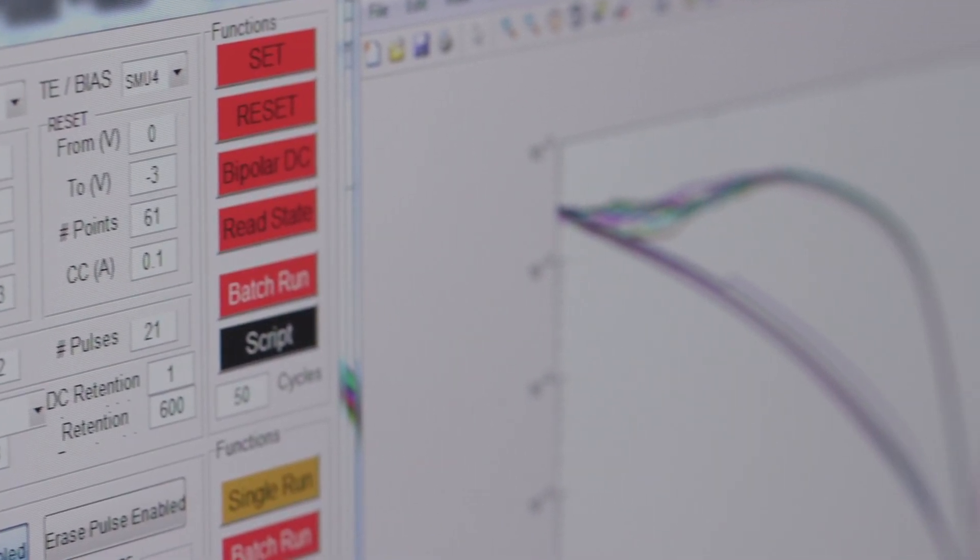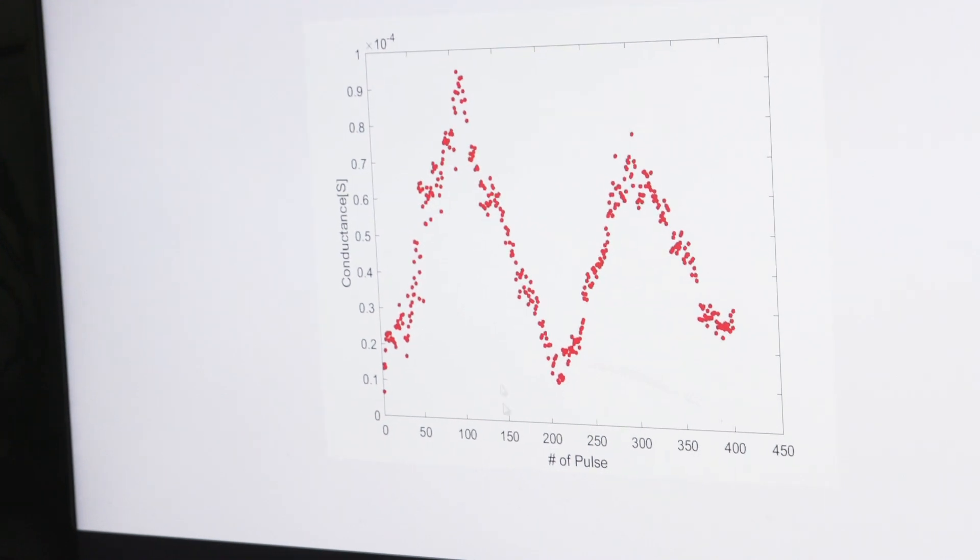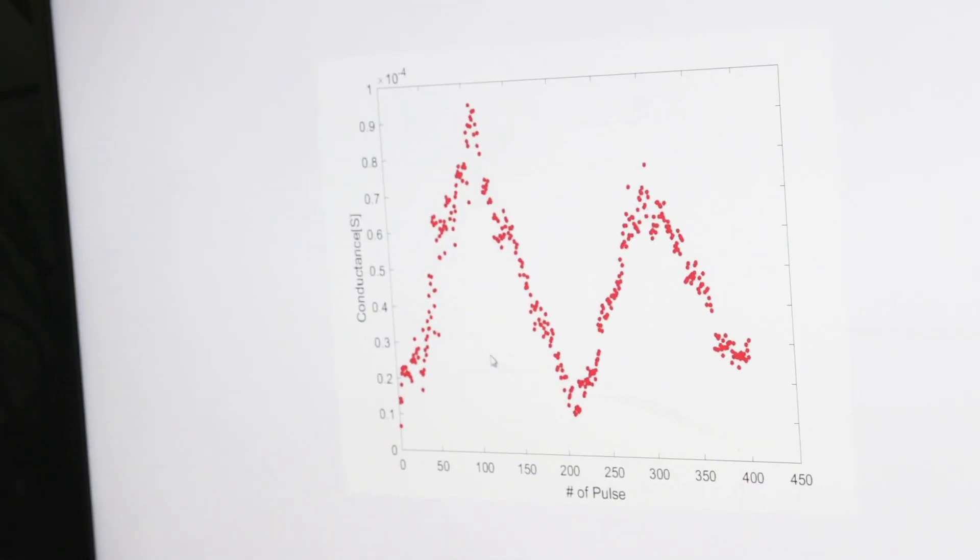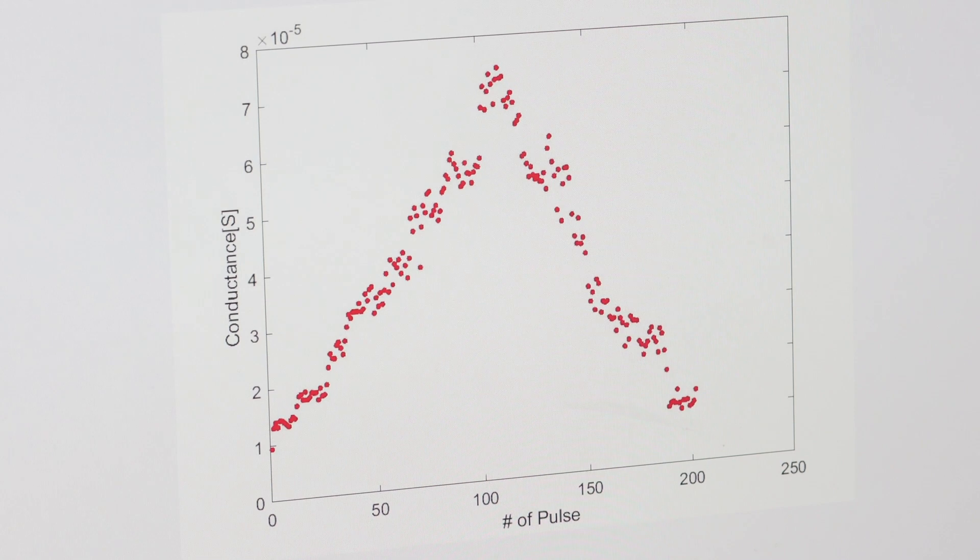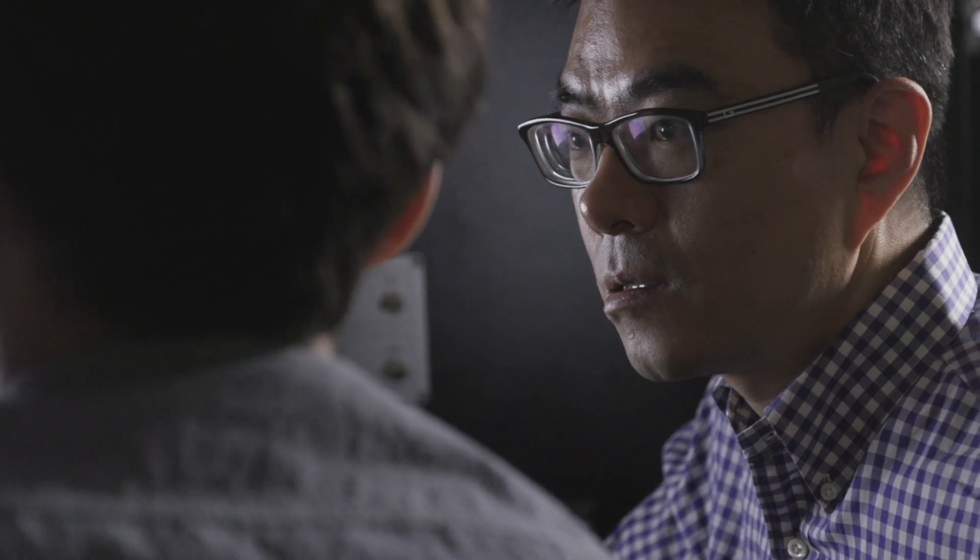Here, our group has demonstrated for the first time that single crystalline silicon and silicon germanium material can work as the artificial synapse, where we can have a strong control on the ionic movement, so that we can have strong control on synaptic weight.